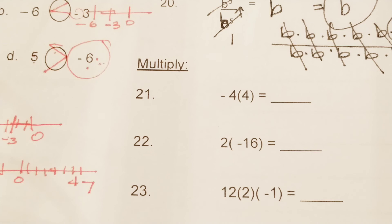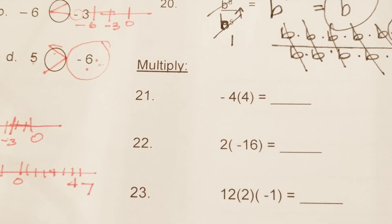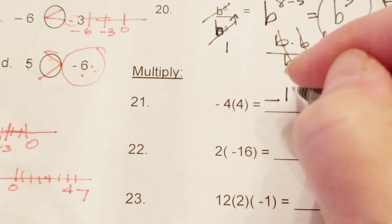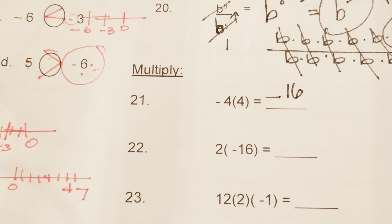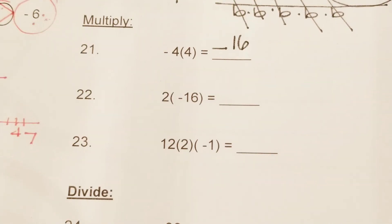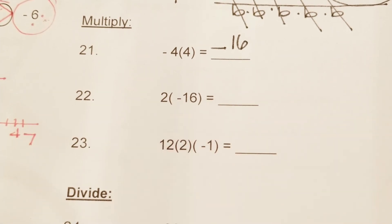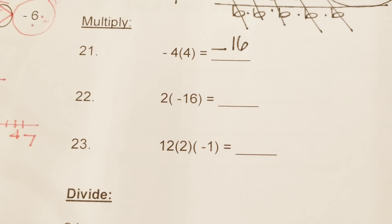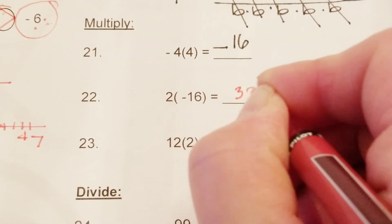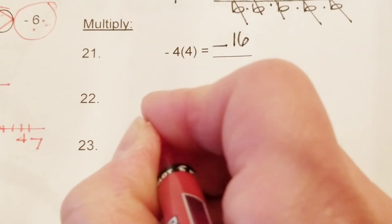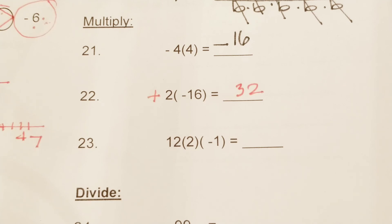Number 21: negative four times four — so multiplication, we know that by the parentheses. When you multiply a negative times a positive you get a negative, and four times four is 16. Then two times negative 16 — parentheses mean multiplication — and 16 times 2 is 32. We have a negative and a positive, and a negative times a positive is a negative.